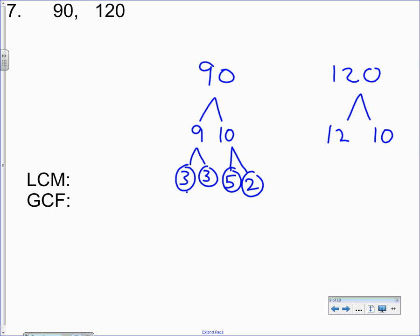So three times three times five times two is 90. Twelve is six and two. Two is prime. Six is three and two. Both prime numbers. And remember, prime number means it only has two factors, the number and one, one in itself.